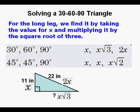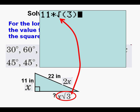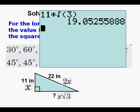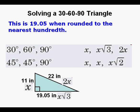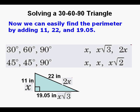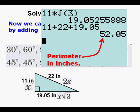For the long leg, we find it by taking the value of x and multiplying it by √3. We do that in our calculator and we get 19.05. When rounded to the nearest hundredth, we can find the perimeter by adding 11, 22, and 19.05. So that's our perimeter of 52.05.